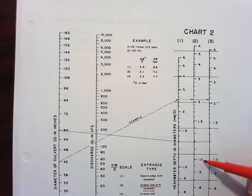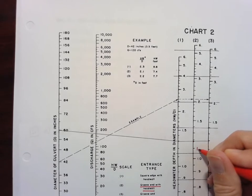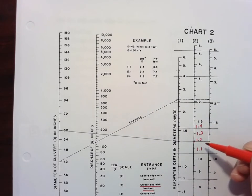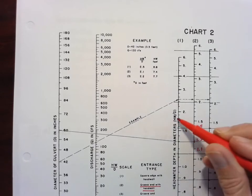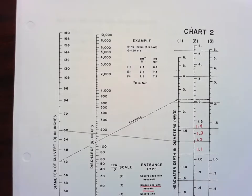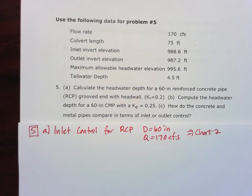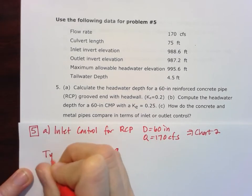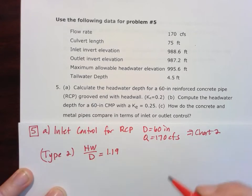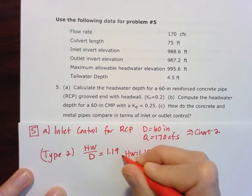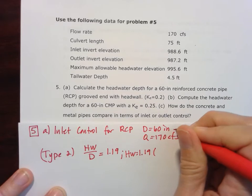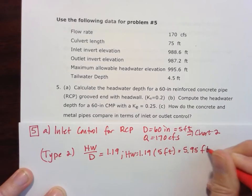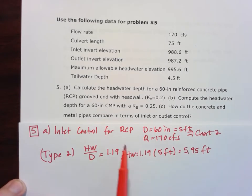And I can see that with that information, this is my 1.0 line and this is my 1.5 line. So this would be 1.1, 1.2, 1.3, 1.4. I'm not all the way to that 1.2 line, so I'm going to call that HW over D 1.19. Of course you could call it 1.2 and that would be okay, but I'm a little short of it. So HW over D equals 1.19 for the type 2 entrance scenario. Then I can take that 1.19, solve for HW - 1.19 multiplied by the D, that's 60 inches which is the same as 5 feet. So we multiply by 5 feet and we get 5.95 feet for the inlet headwater for that reinforced concrete pipe.